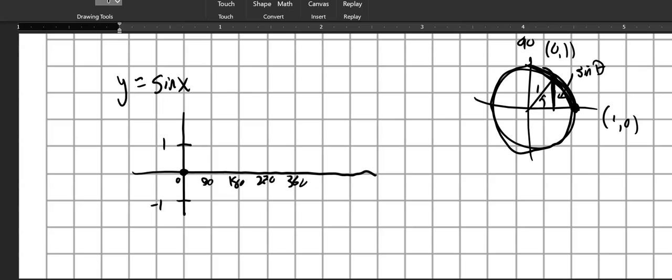And then as I get up here to 90 degrees, the height becomes 1. And then back at 180, down over here at 0. At 270, it's negative 1. And at 360, it's 1. And then it starts to repeat itself again. It just keeps doing that.